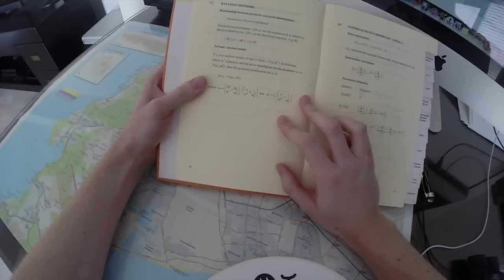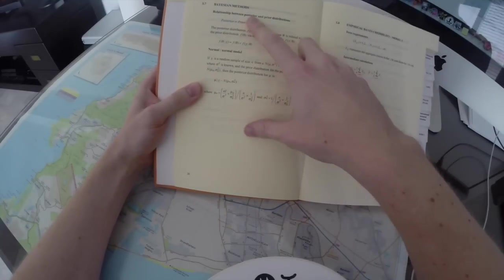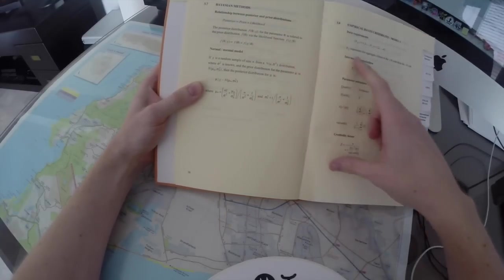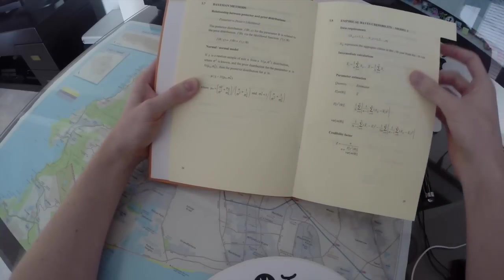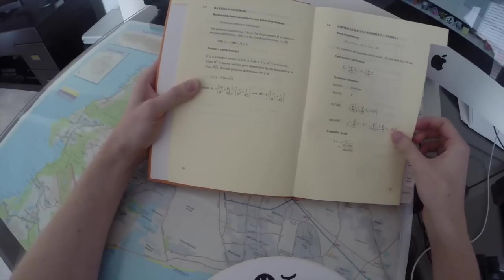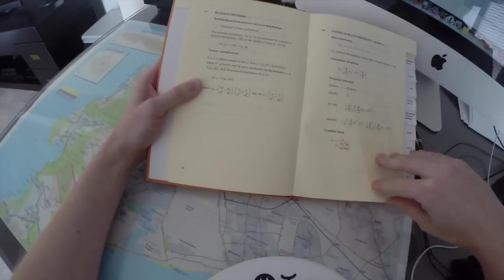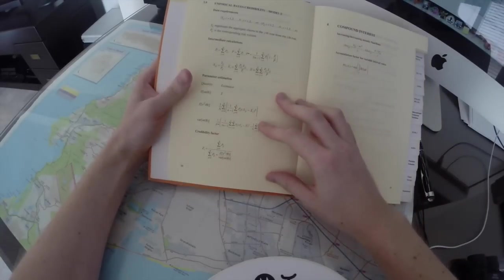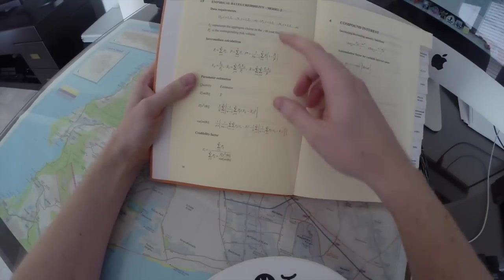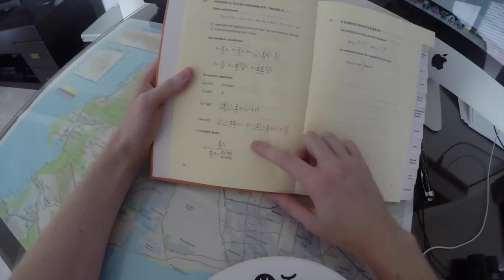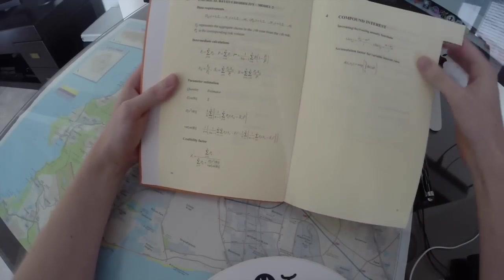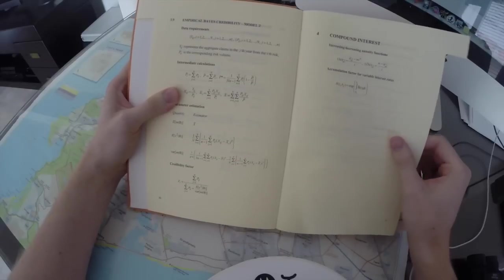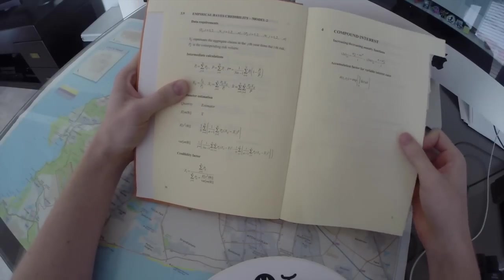Bayesian methods. The relationship between the posterior and the prior distributions. Then there's empirical Bayes' credibility. Parameter estimations, the credibility factor. We also have empirical Bayes' credibility model version 2. And then we go into compound interest. Increasing and decreasing annuity functions.